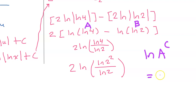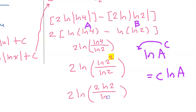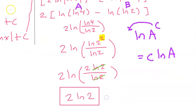Here's that other property I was mentioning: if I have the natural log of A to the C power, that is equal to C times the natural log of A. In other words, if you have the natural log of something with a power, you're allowed to take that power and put it to the front. So I'm going to take this 2 and put it in the front. I will have 2 times the natural log of — and in the numerator, I now have 2 natural log of 2. You can probably see why I just did that, because now these are going to cancel each other out. So this is your final answer, and this is what you would most likely see on a multiple choice question.